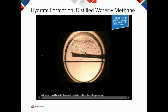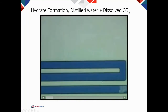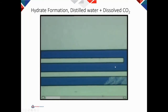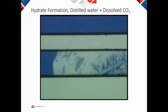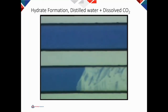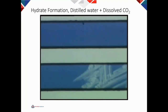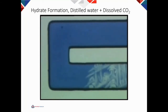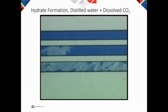For hydrate formation we don't necessarily need a gas phase — hydrate can form from gas dissolved in water. Here you can see CO2 forming significant amounts of hydrate in aqueous streams without any free gas phase. We can control the rate of hydrate formation by adjusting the pressure. The hydrates form in a tree-like structure to remove heat, because hydrate formation is exothermic and produces a lot of heat.